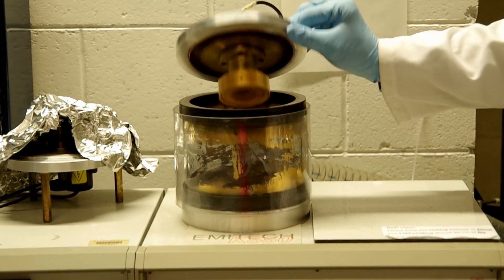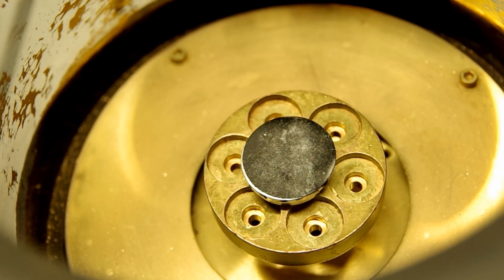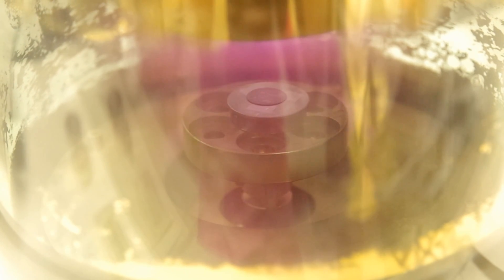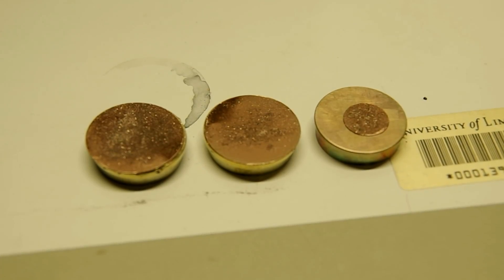Now, use gold sputter coating to coat the samples with gold particles to increase the thermal conductivity, reduce the beam damage, reduce the sample charging, and to improve the secondary electron emission in order to improve the image resolution. The gold coating is done.